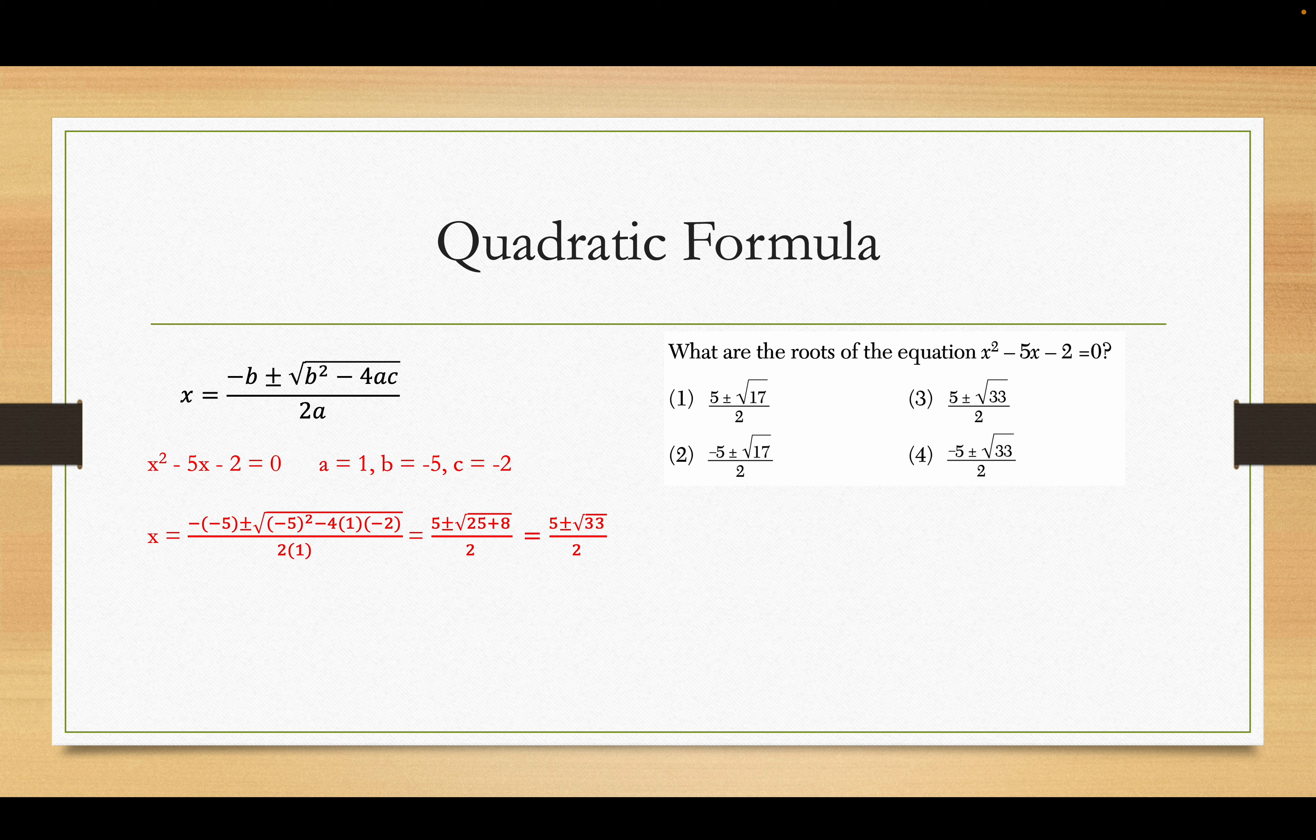If you have a graphing calculator, it will give you the wrong answer. And if it's not graphing, then it's likely to. Minus 4 times 1 times negative 2 over 2 times 1. That's 5 plus or minus the square root of 25 plus 8, which is 33 over 2. That would be choice 3.